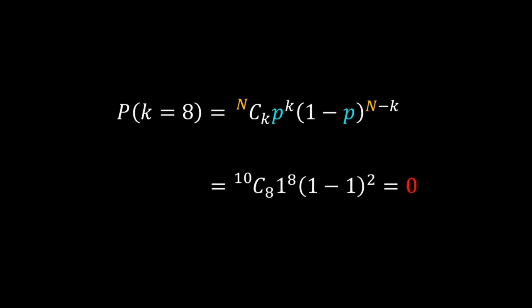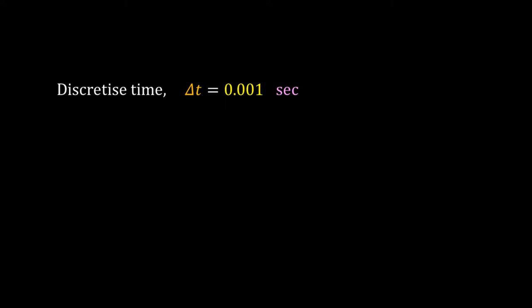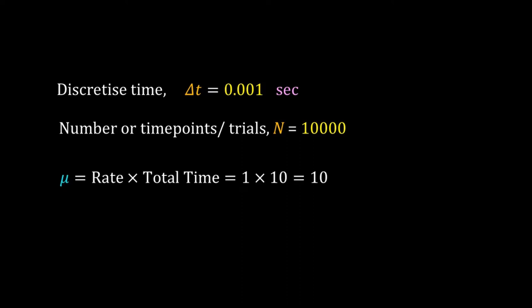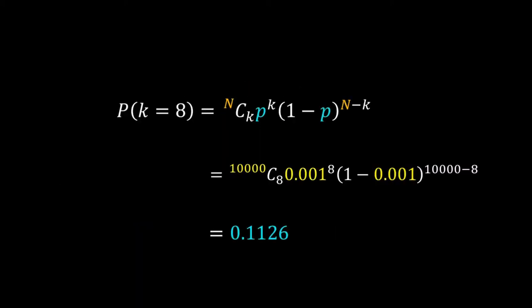Let's try again. Now discretize time in much smaller intervals. Consider each interval as 1 millisecond, so Δt = 0.001 seconds. The number of trials in 10 seconds is now 10,000. Mean remains the same, but the probability changes. Now p = 0.001. Use these updated values of n and p to calculate the probability again using the same binomial PMF. Now the probability is 0.1126. This probability makes some sense.